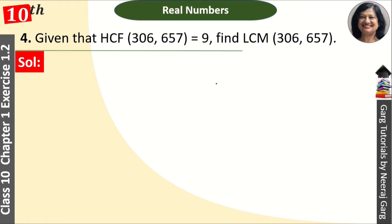Starting Question Number 4: Given that HCF of 306 and 657 is equal to 9. We have two numbers given — 306 and 657 — and HCF is given as 9. We have to find the LCM of 306 and 657.